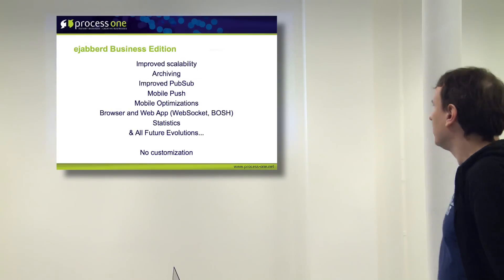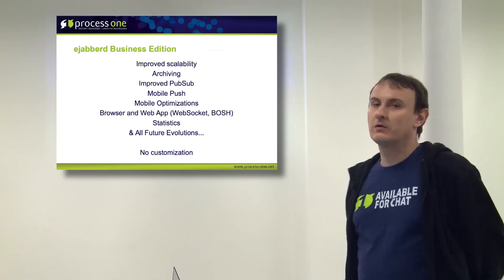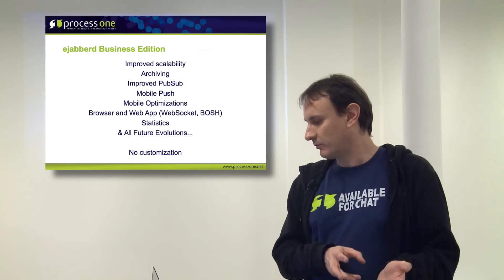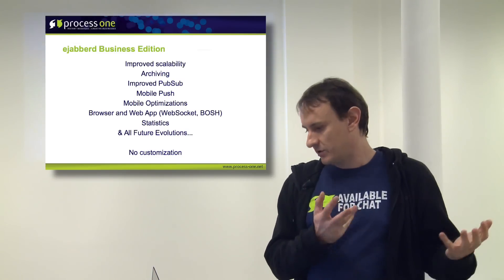We are already familiar with Netivision. Compared to the open-source version, we've improved some stuff on the cloud specifically on this version. We have improved the scalability, which means that on the cloud you can run more and more users. We provide archive for messages, and we have worked on the Publish and Subscribe sub-module to make it more efficient.